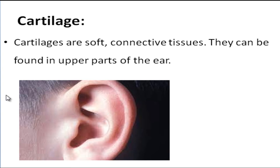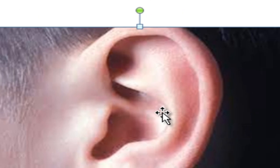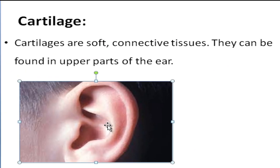Our next keyword is cartilage. Cartilages are soft connective tissues. They can be found in the upper parts of the ear.